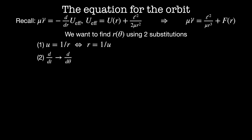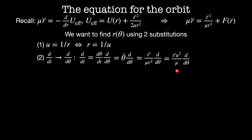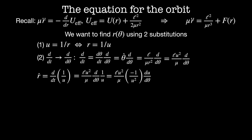For the second substitution, we change time derivatives to angular derivatives using d/dt = theta-dot times d/d-theta. Since angular momentum is conserved, theta-dot equals l divided by mu r squared. Including the u substitution, d/dt becomes l u² / mu times d/d-theta. Then r-dot equals d/dt of 1/u, which simplifies to minus l/mu times du/d-theta.